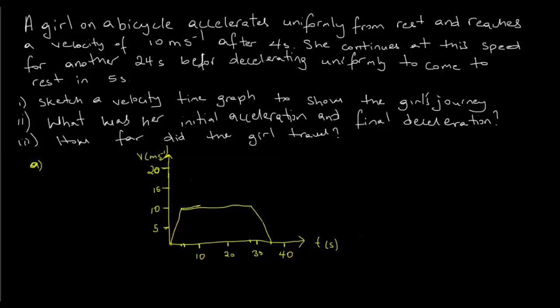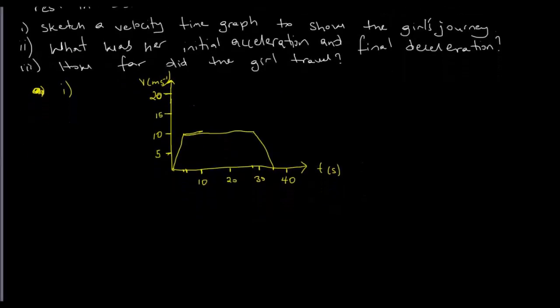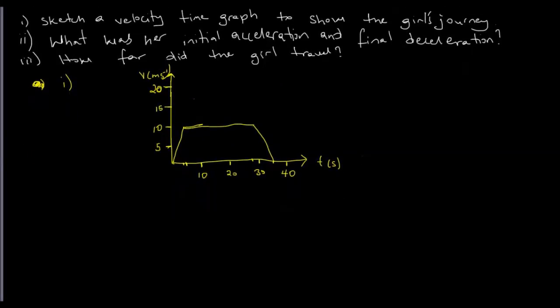She decelerates and comes to rest, so this is what the velocity-time graph of her journey looks like. That completes part one. Part two of the question asks: what was her initial acceleration and final deceleration?